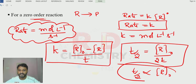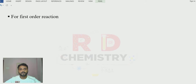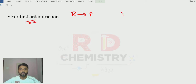For zero order reaction, half-life is directly proportional to [R₀]. That means as the initial concentration changes, the half-life also changes — it depends on the initial concentration. Now let us move on to the first order reaction. Assuming reactant R gives product P, the rate = K·[R]^1.